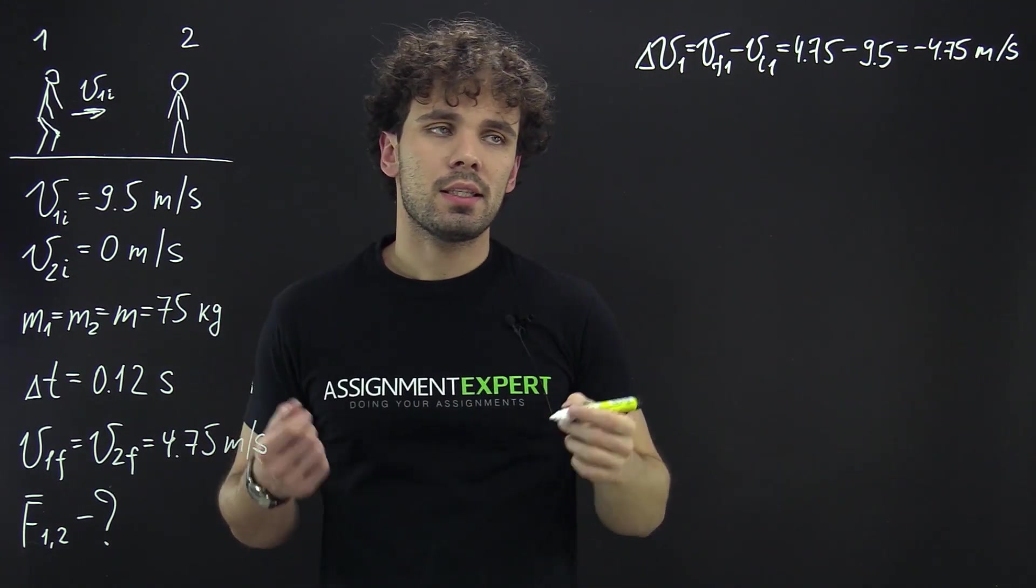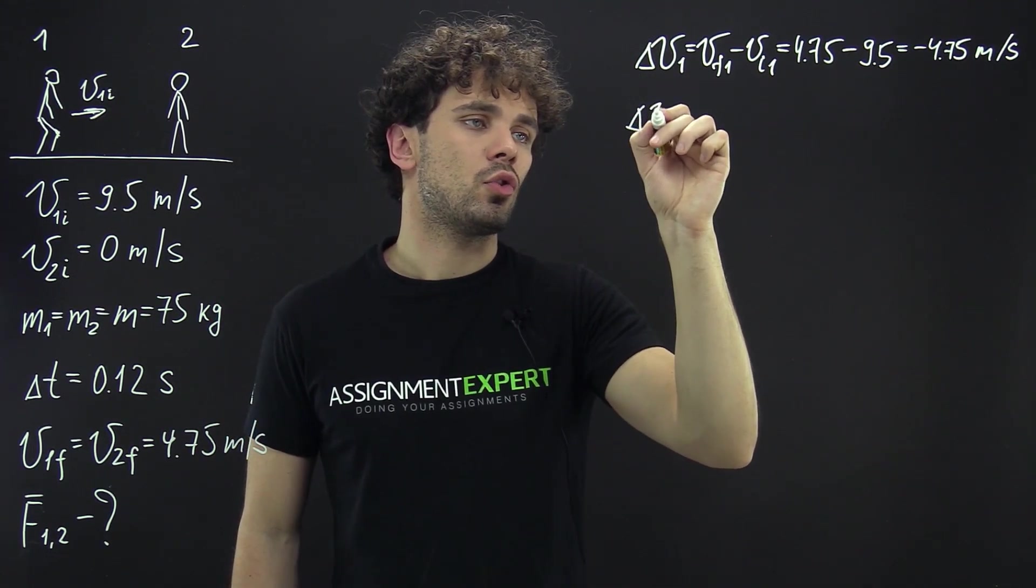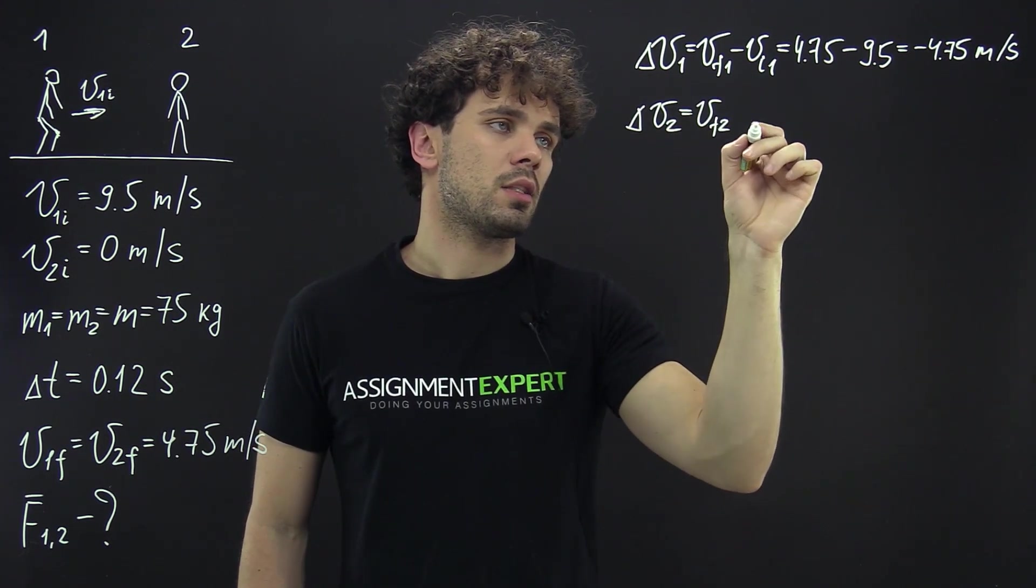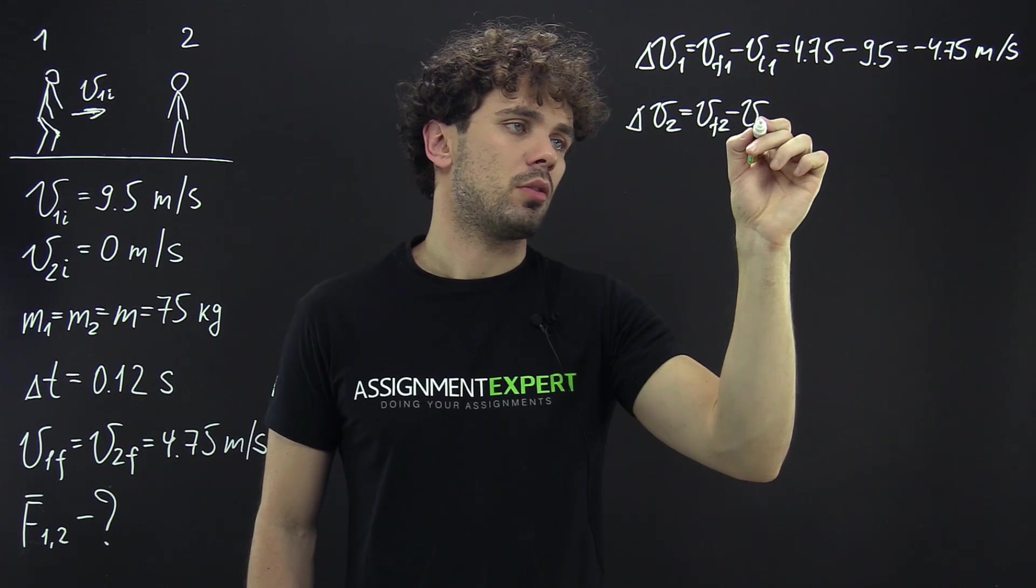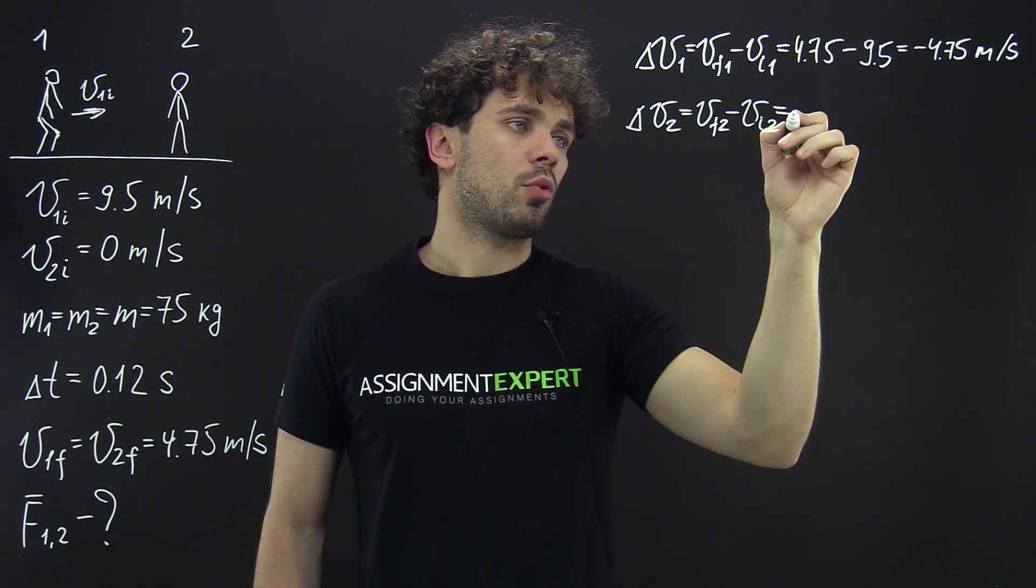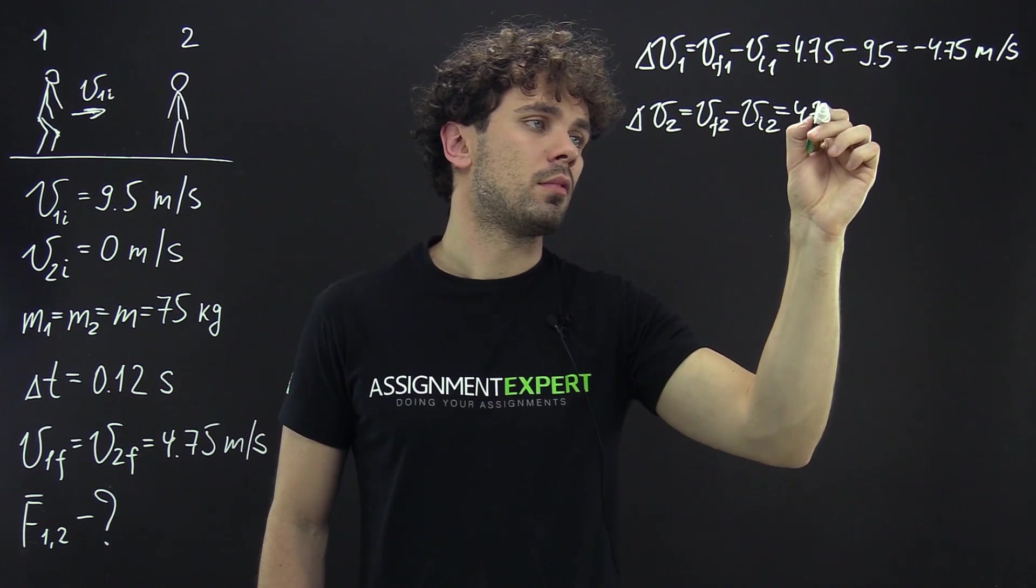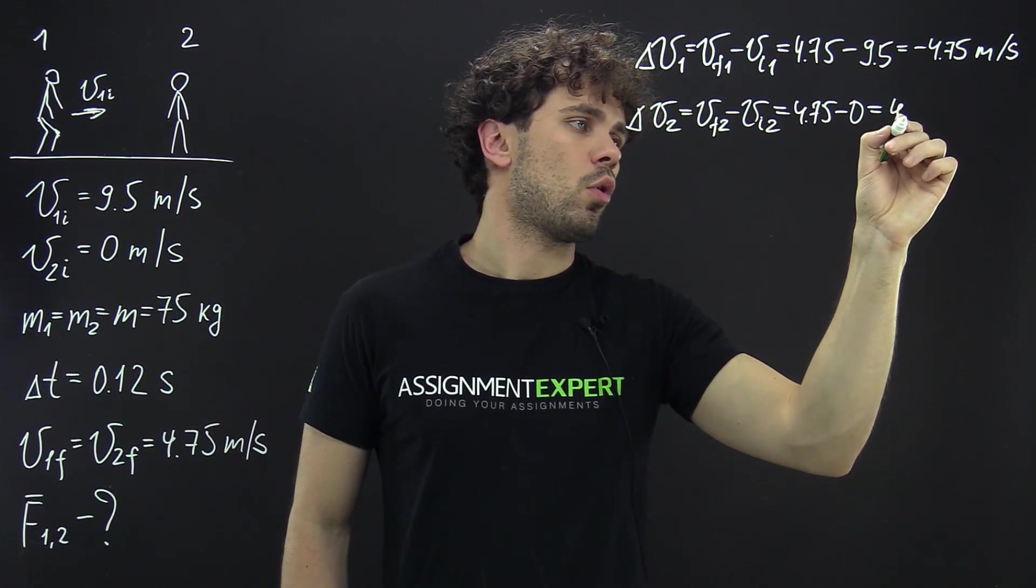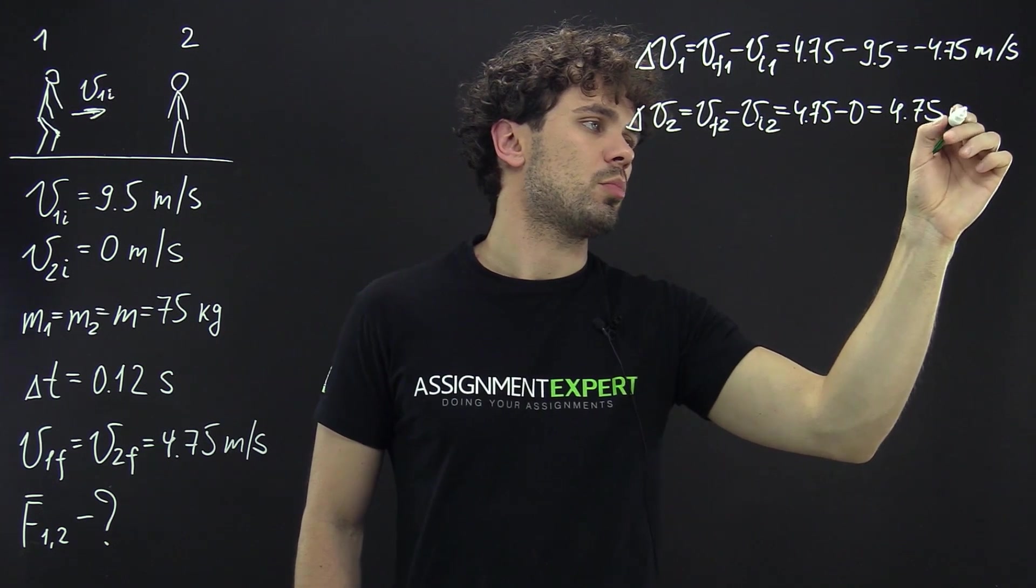And for the second skater we have delta V2 equals the final speed of the second skater minus his initial speed. And this is 4.75 minus 0 and we get 4.75 meters per second.